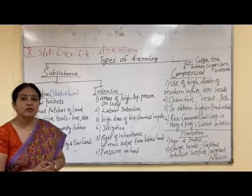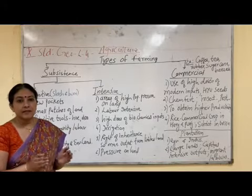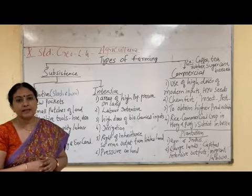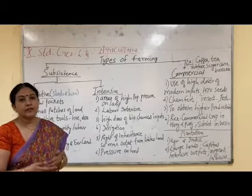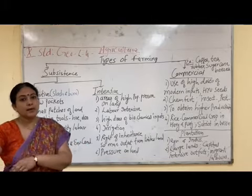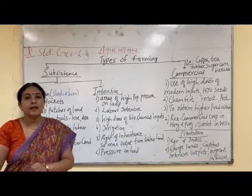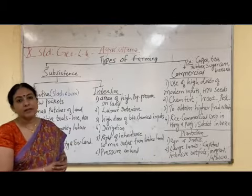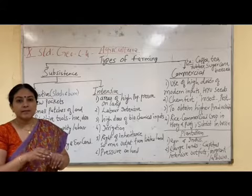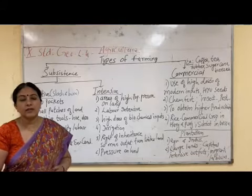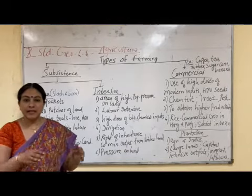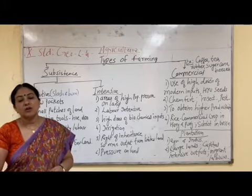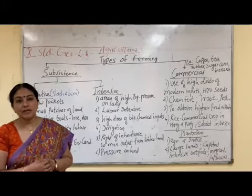This primitive subsistence farming is also called slash and burn agriculture. In this method, farmers clear a piece of land, cultivate certain crops, and then after a few years they leave that land and move to some other land. They clear new land and do cultivation there, leaving the previous land so that the natural fertility of the soil can be regained. They sometimes cut branches of trees for agriculture, and the forests are also cut and burnt, using the ashes to increase the natural fertility of the soil.